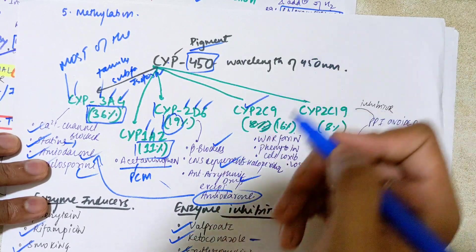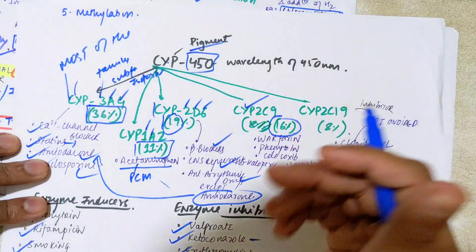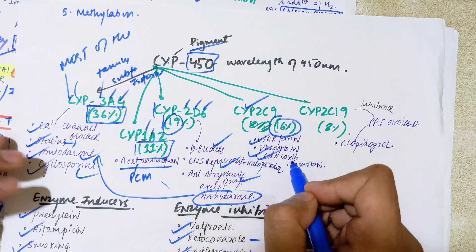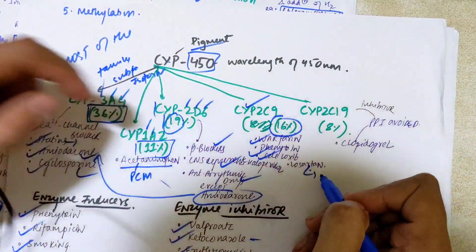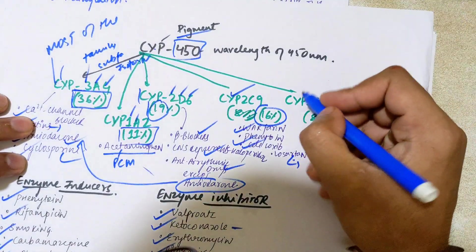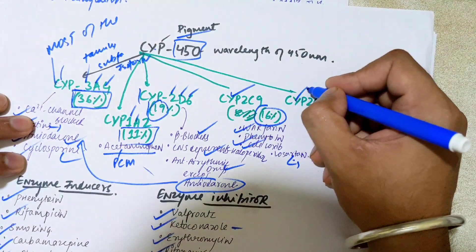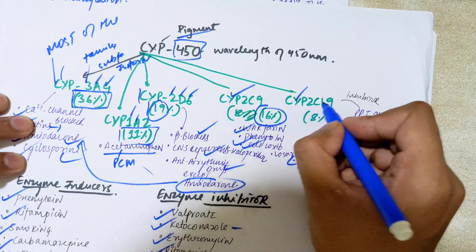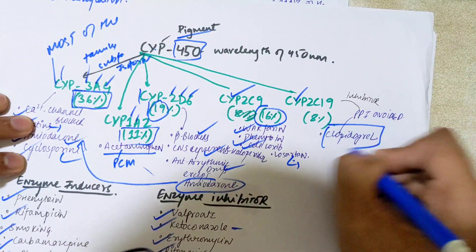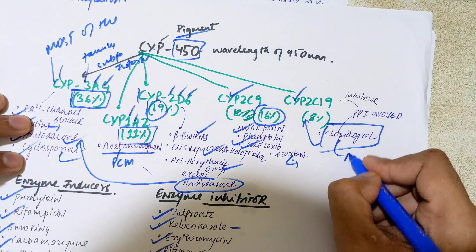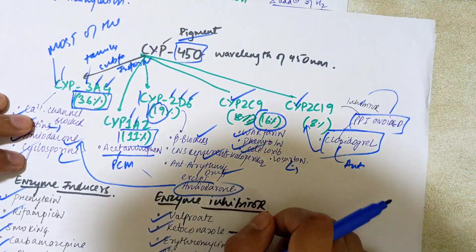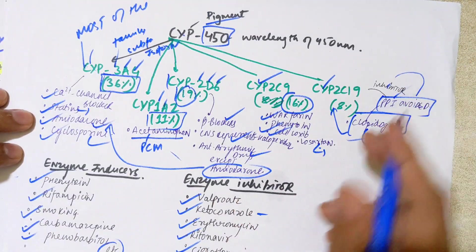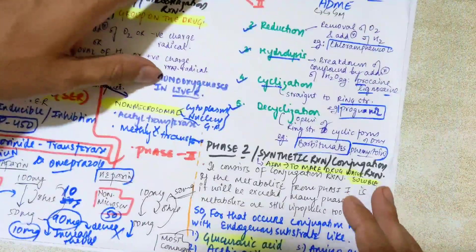CYP2C9 accounts for approximately 16% of drug metabolism — the third most abundant — and metabolizes warfarin, phenytoin, celecoxib (an NSAID), and losartan (an ARB antihypertensive agent). CYP2C19 metabolizes clopidogrel, an antiplatelet drug. Importantly, PPIs like omeprazole are avoided with clopidogrel because they inhibit CYP2C19 activity and reduce clopidogrel's efficacy.